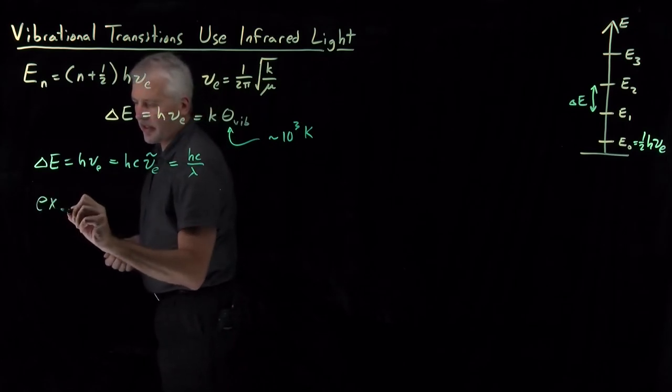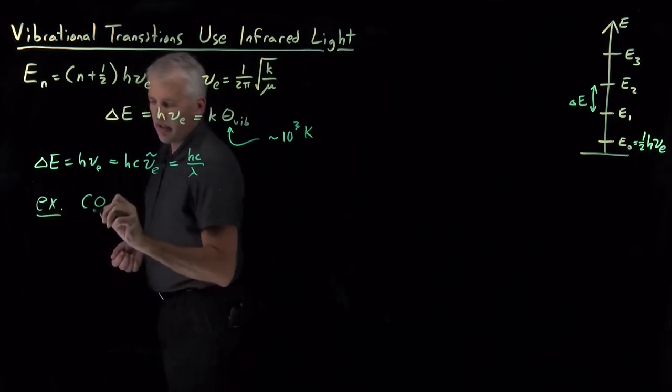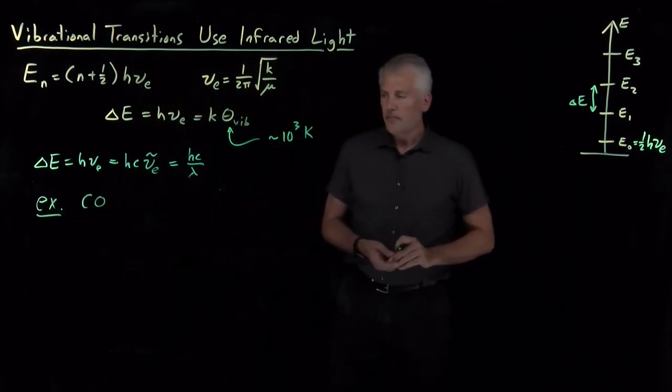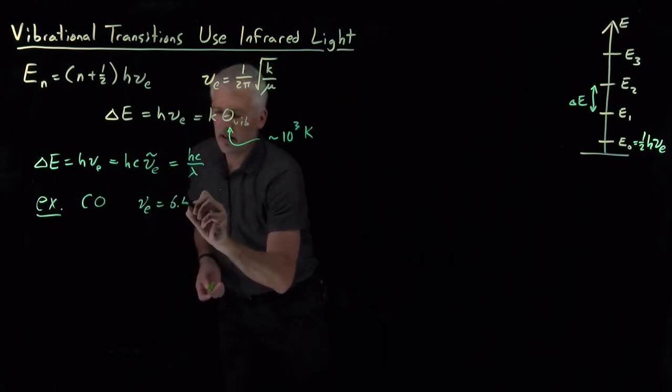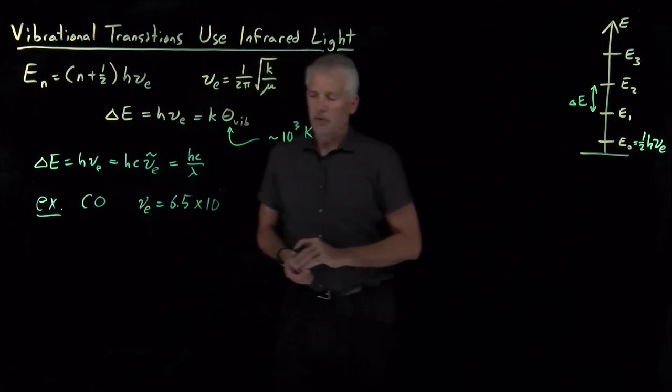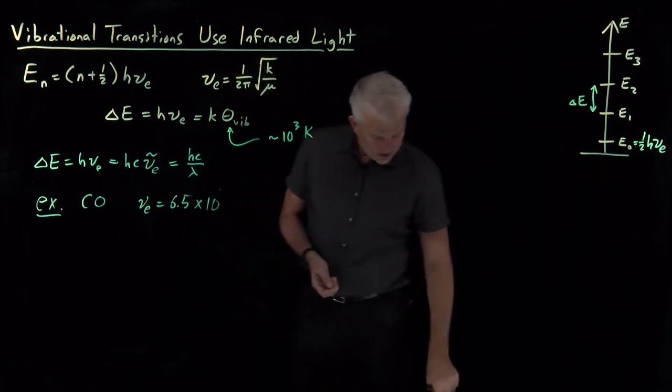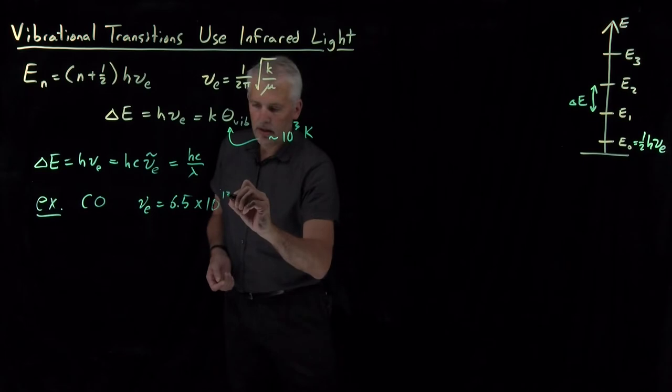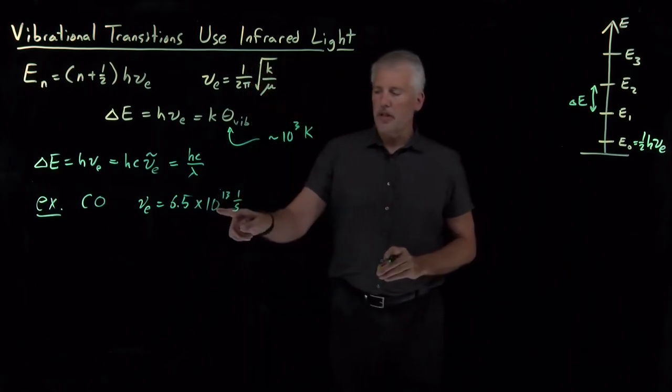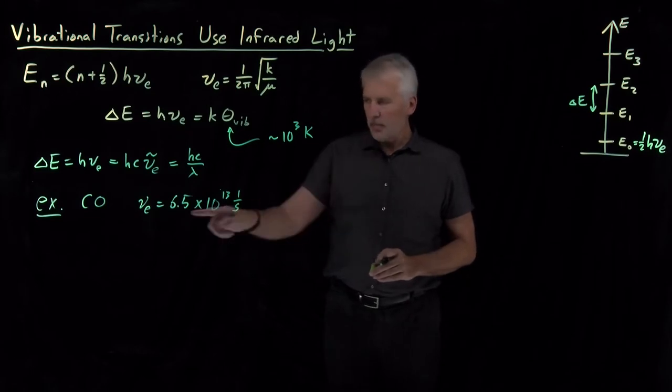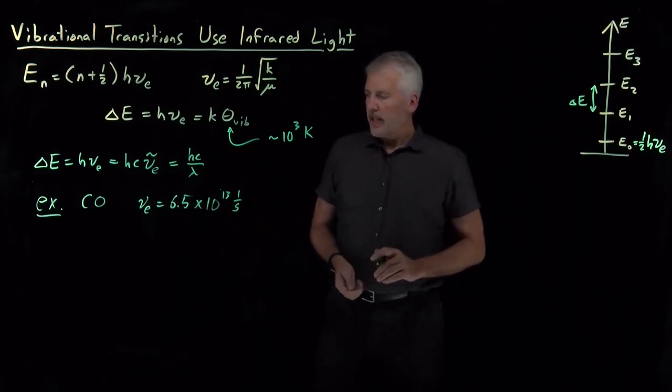So, as an example, let's again take carbon monoxide, where we know, we've seen previously, that the vibrational frequency is 6.5 times 10 to the 13th hertz, 6.5 times 10 to the 13th per second, number of oscillations per second. And then if we want to know, let's do the wavenumber first.